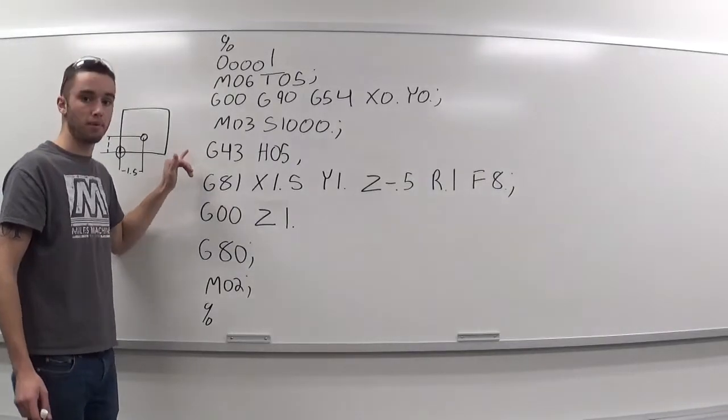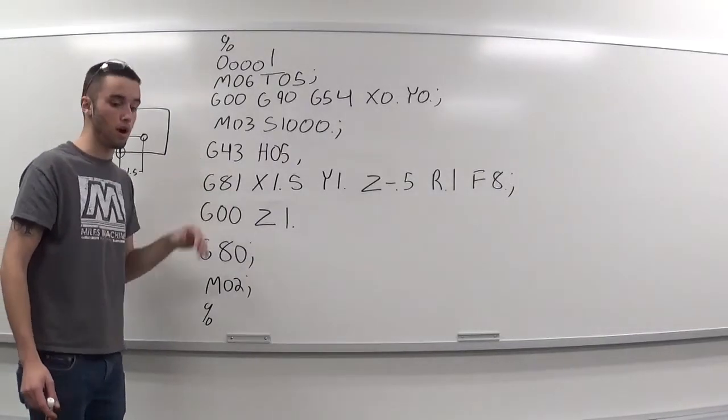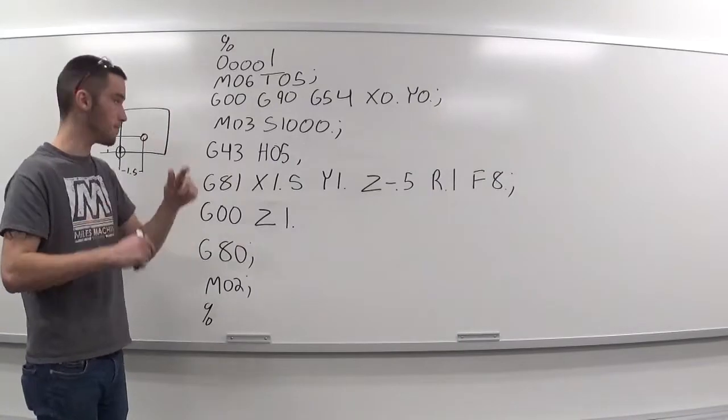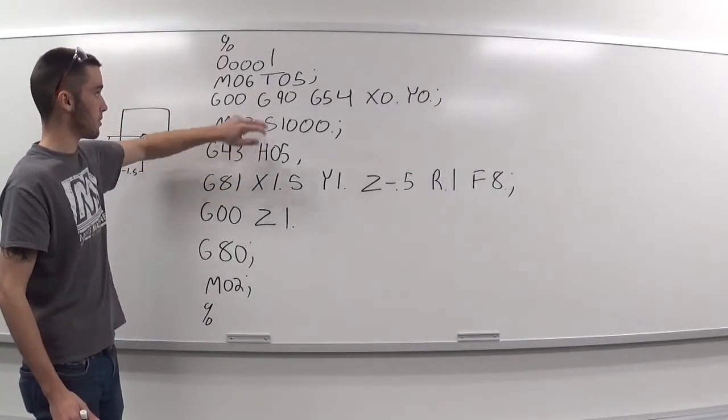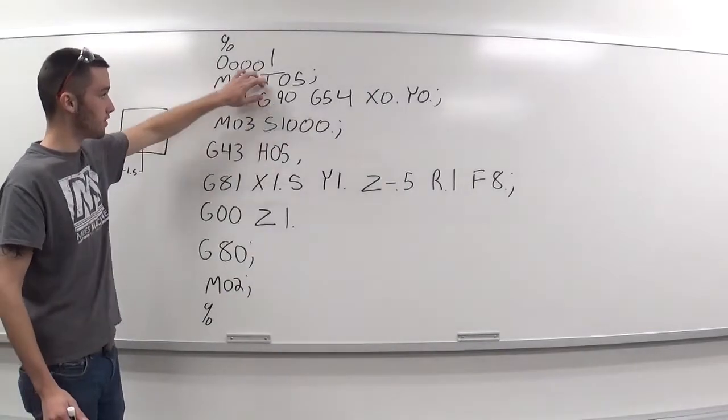G43, which is our tool height compensation, letting the machine know where our tool is in the Z. And our H value is 5. This H value must match your tool value, so H05, T05.